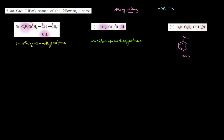Kyunki dono first aur fourth position par hi milenge, numbering karenge: first carbon, second, third, fourth. Toh iska naam kya ho jaayega? 1-methoxy-4-nitrobenzene. Aur yeh jis naam se famous hai woh naam hai anisole — OCH3 group aur para position par NO2 group.